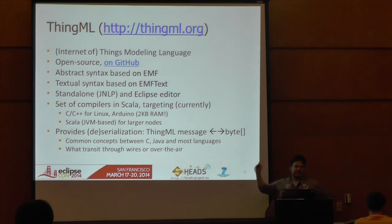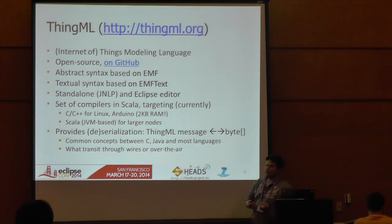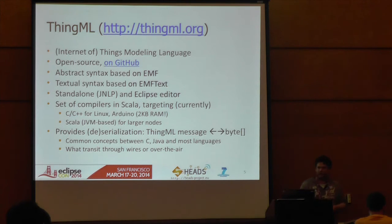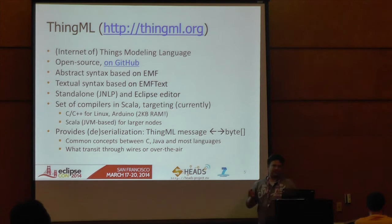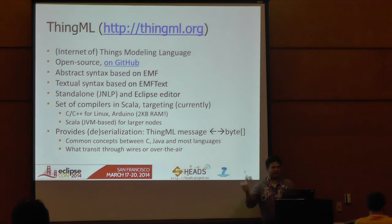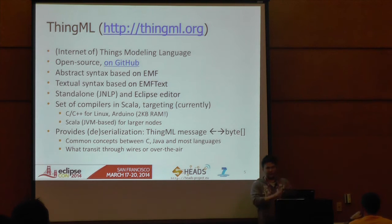We have implemented a set of compilers targeting C and C++. We have successfully generated code for the Raspberry Pi and also for the Arduino. Arduino is a very resource-constrained platform with only two kilobytes of RAM, so we go well down in the stack. For comparison, Java ME needs at least 128 kilobytes of RAM to run. We want to address very small sensors too.